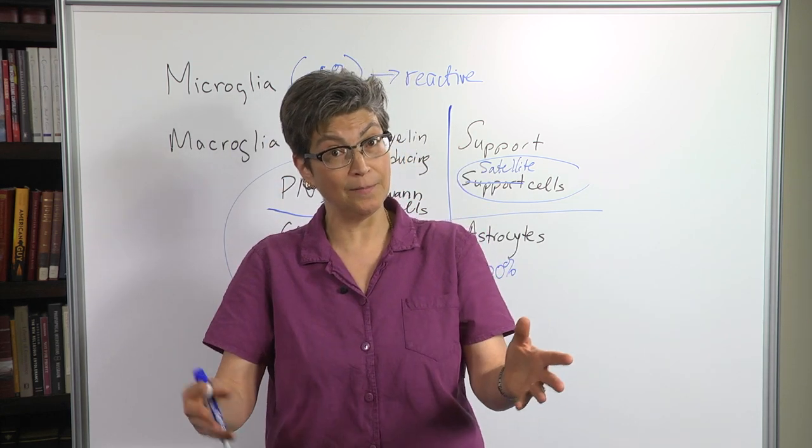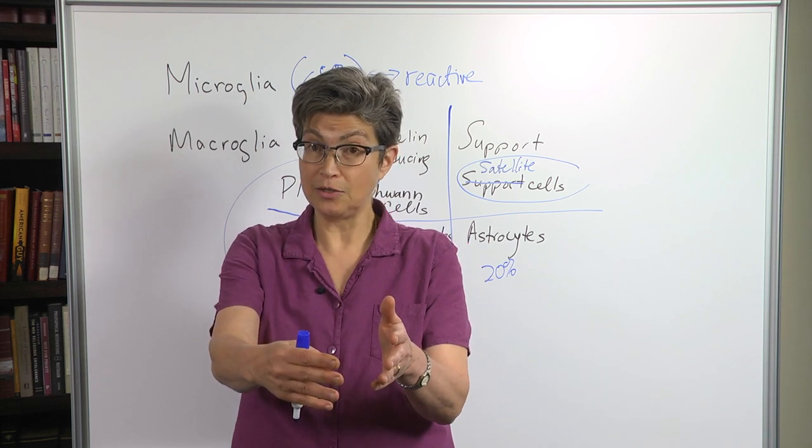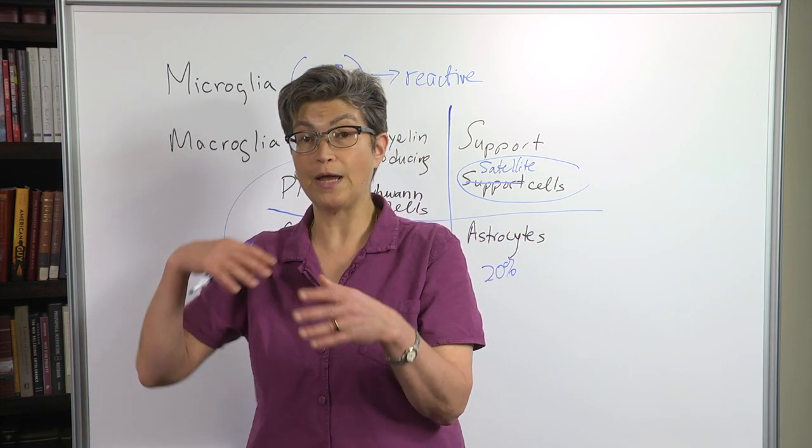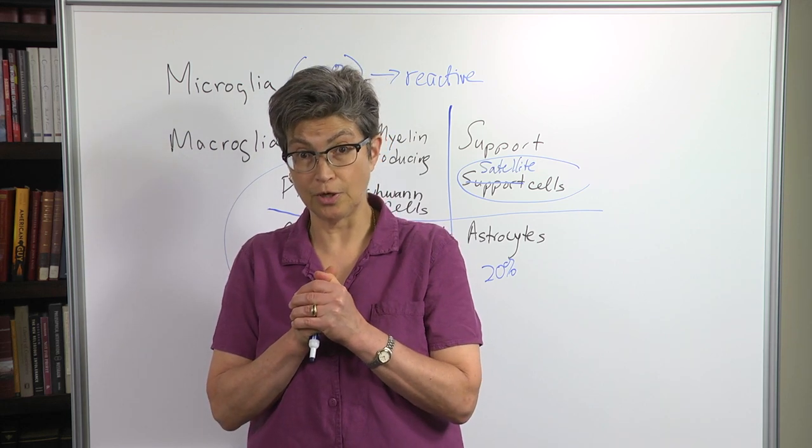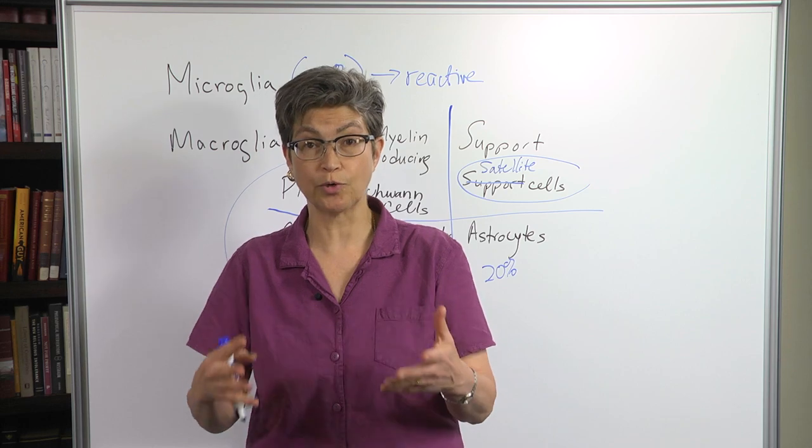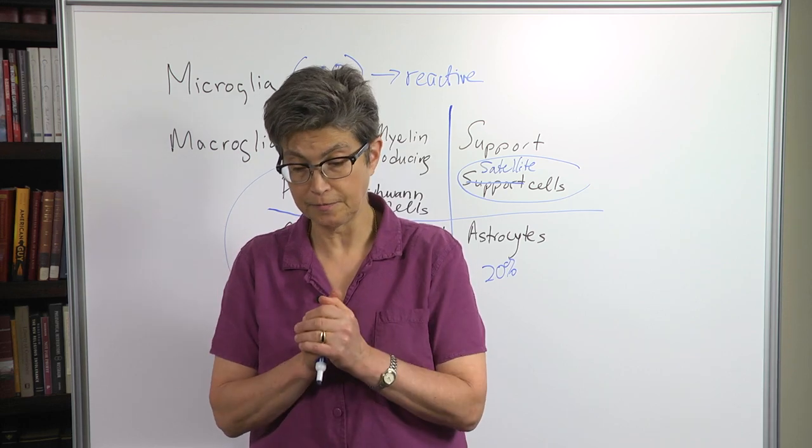And there are glial cells that are dividing and serve one function during development, but then actually divide and become either a terminally differentiated glial cell or a terminally differentiated neuron. So, there are glial cells that are progenitor cells, and that's what we're going to talk about in the next section.